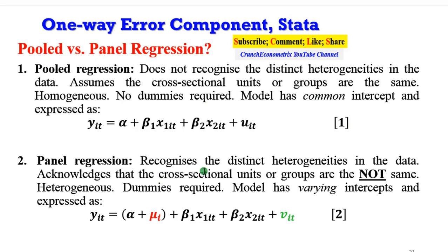A panel regression, on the other hand, recognizes the distinct differences in the data. It acknowledges that the cross-sectional units or groups are not the same, that is they are heterogeneous. Therefore, dummy variables are required during estimation. The model has varying intercepts as given by equation 2.